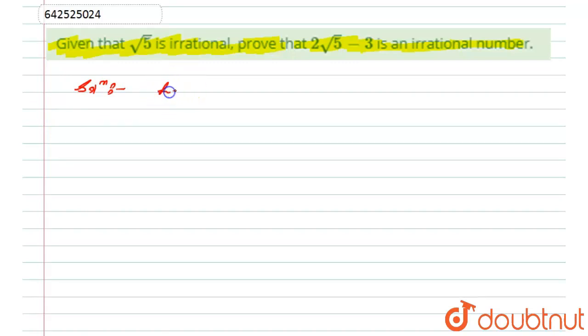So here I will do first: Let x equals 2√5 - 3 is a rational number. Actually, I am considering here a contradiction.